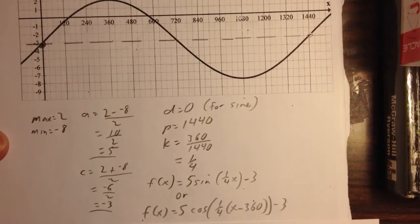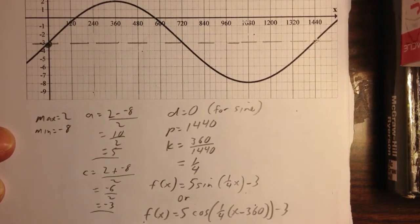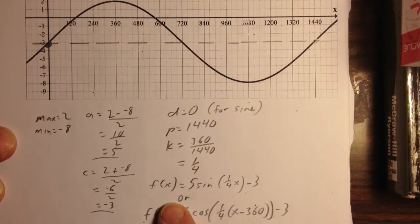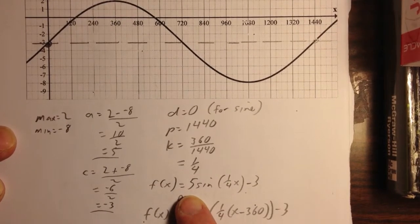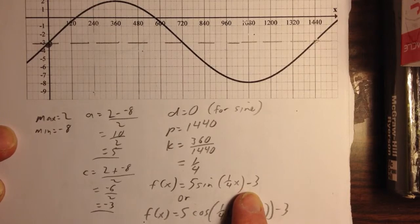So, since there is no phase shift for sine, my sine function will just be f(x) equals 5 sine 1 quarter x minus 3.